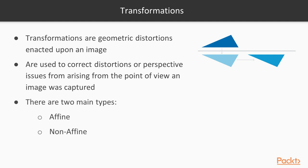This diagram should shed some light on what transformations actually are. Imagine this is our original image, and we're doing some operation on it to move it this way and then that way. That is the simplest type of transformation, and it's called a translation, which you will see in the following slides.